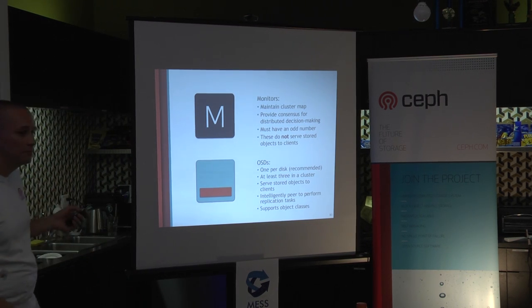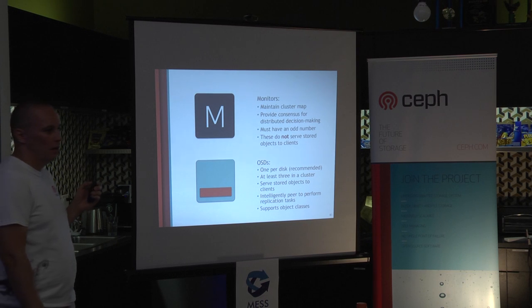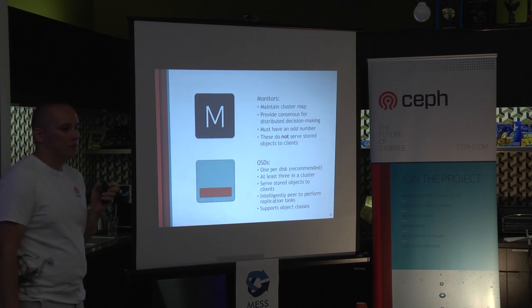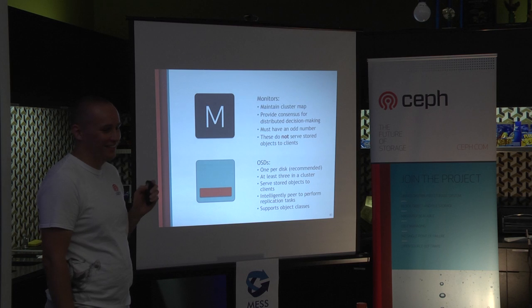Each OSD is defined by some amount of storage — you point it to a sub-directory, and usually that sub-directory is a whole separate disk. Usually we go with a JBOD-style setup where a physical disk has a filesystem on top of it and an OSD running on it, and there's usually another disk that is the journal for that OSD. If you have lots of disks per server, you might bundle them into a RAID 6 set and then run an OSD on top of that.